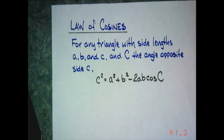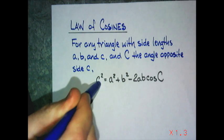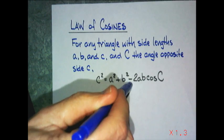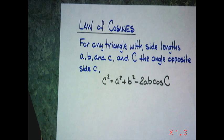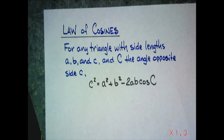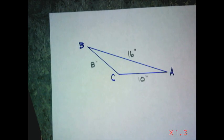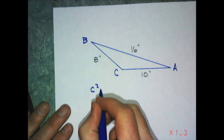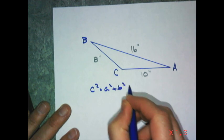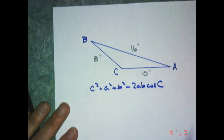The Law of Cosines states that for any triangle with side lengths a, b, and c, and angle C opposite side c: c² = a² + b² − 2ab cosine C. The biggest side squared equals the sum of the other two sides squared minus 2 times those two sides times the cosine of the included angle. It's basically the Pythagorean theorem minus a little bit, and it rolls right off the tongue.